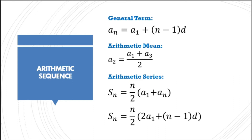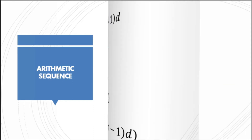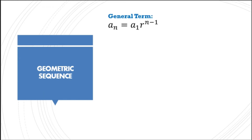For the geometric sequence, the general term is: a sub n equals a sub 1 multiplied by r raised to (n minus 1). Here, a sub n is the general term, a sub 1 is the first term, and r is the common ratio. We get the common ratio by dividing two consecutive terms — for instance, a sub 2 divided by a sub 1, or a sub 3 divided by a sub 2.